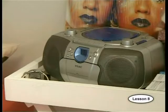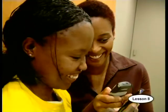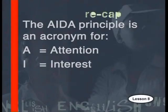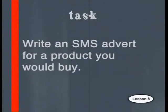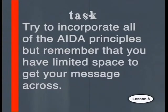We've almost reached the end of our series on the world of advertising. Let's recap what we've learned: mediums are ways of sending messages; the target market is the group of people that an advert is aimed at; most adverts follow the AIDA principle of attracting attention, getting interest, creating desire, and inspiring action. We've also analyzed examples of adverts and public service announcements to see how they use emotion, humor, and irony to spread their message. Before you go, here's a task: write an SMS advert for a product that you would buy. Try to incorporate all of the AIDA principles, but remember that you have limited space to get your message across.